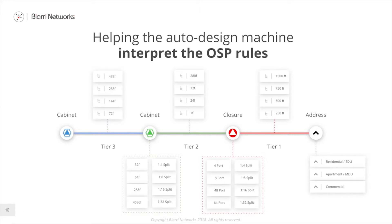We can also set the cable sizes that are valid for Tier 3 — the cables running between the central office location and the Tier 2 cabinet.